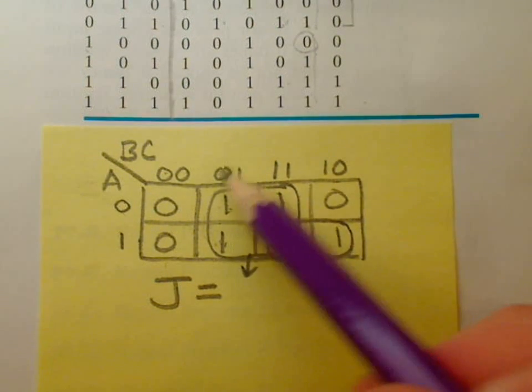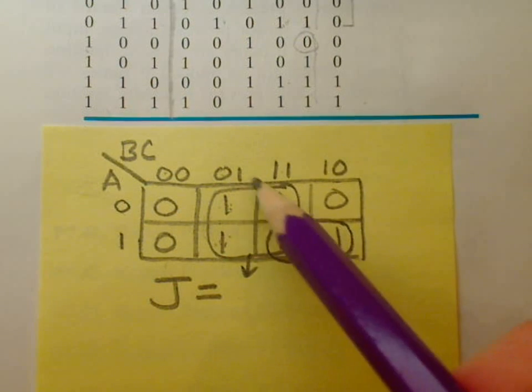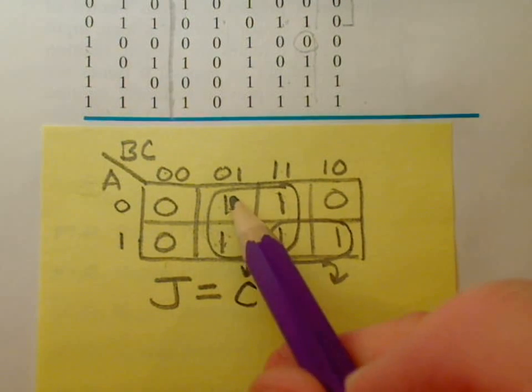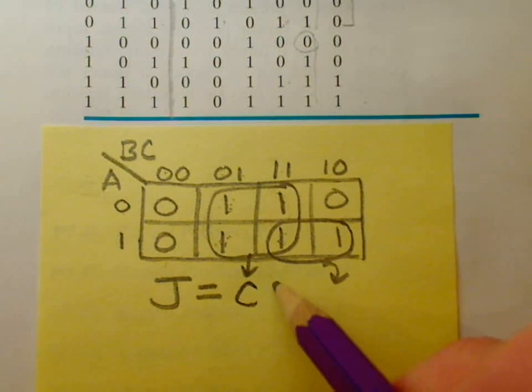You notice that B also changes as you go through these cells. So C is the only one that remains the same going through these four, and it remains high, so we mark it as C rather than C naught.